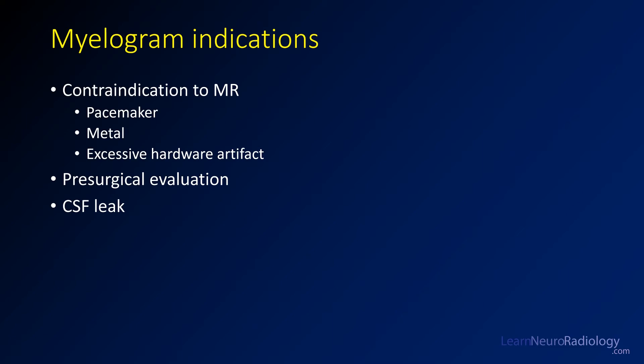In this video we're going to talk about myelograms — why you might do them and specific techniques you might use. Myelograms are typically done when the patient is a contraindication to MR, such as a pacemaker, some sort of metal implant, or too much hardware artifact from lumbar spine hardware. They're often done as pre-surgical evaluation, and in some specific scenarios you might do a myelogram to evaluate for a site of CSF leak.